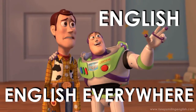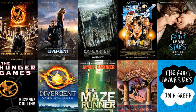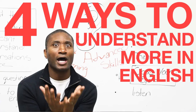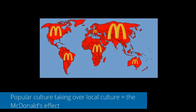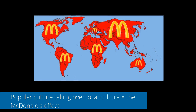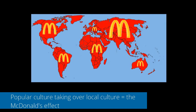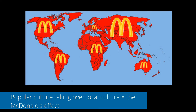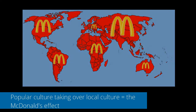An example of homogenization is how English is a dominant language on the internet and in global media. Popular movies and TV are usually in English, and most social media tends to be in English, which results in people wanting to speak English instead of their traditional language. Another example is how popular culture takes over local cultures — McDonald's has restaurants in almost every country, often creating the 'McDonald's effect.'